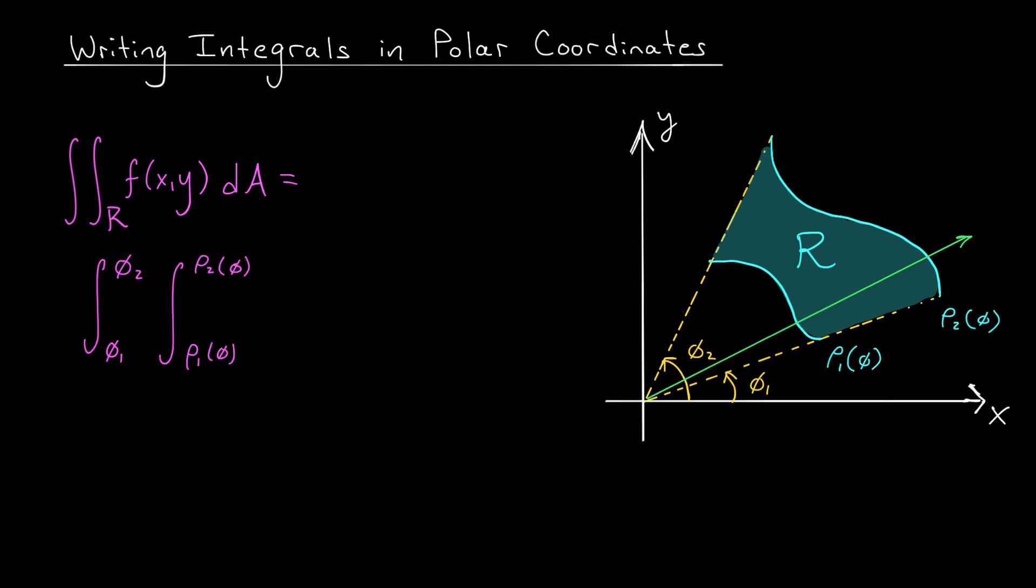Of course, we have to convert our function. So we'll replace x with rho cos phi and we'll replace y with rho sine phi. Finally, we have to convert our area factor, dA. Well, as we saw on the last slide, dA becomes rho d rho d phi. And there you go, folks. A handy little formula for converting Cartesian integrals into polar integrals. Now, whatever you do here, don't forget this extra rho term. It's so easily forgotten. But if you leave it out, it's going to lead you to the wrong answer.